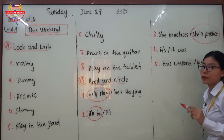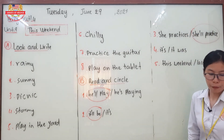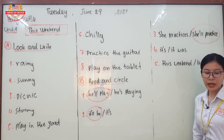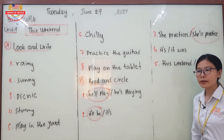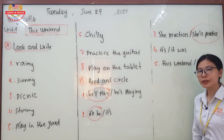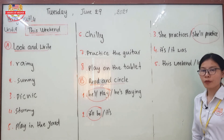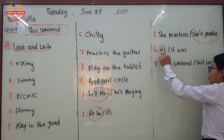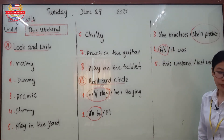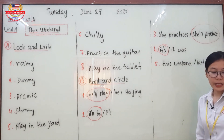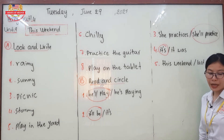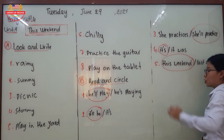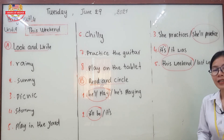Number three: 'If it's raining this weekend, she practices or she'll practice.' The answer is she'll practice — present plus future form makes the first conditional. Number four: 'If it's or it was stormy this weekend, he'll play on his tablet.' The first conditional form is present form plus future form, so it should be it's.